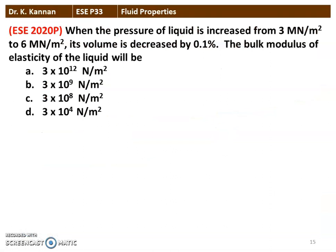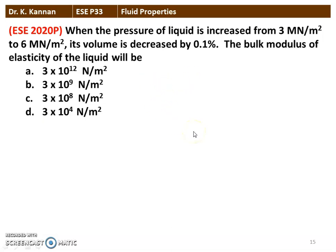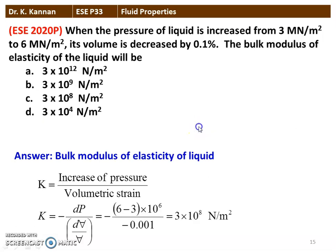The first question is from the 2020 question paper. When the pressure of a liquid is increased from 3 MN/m² to 6 MN/m², its volume is decreased by 0.1%. The bulk modulus of elasticity of the liquid will be — we have 4 options, and we need to identify the correct answer. We will calculate the bulk modulus of elasticity.